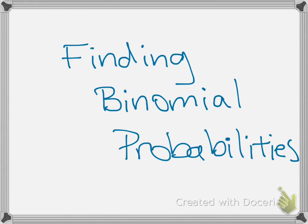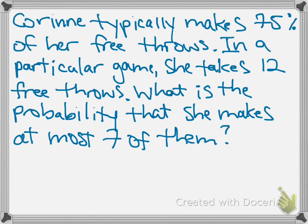It's on page 521, and the example says: Corinne typically makes 75% of her free throws. In a particular game, she takes 12 free throws, and we want to calculate the probability that she makes at most seven of those shots.